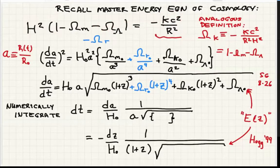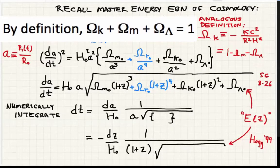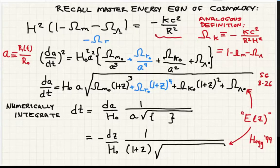I want to give you one other identity which is going to be useful. Omega k is this kind of weird thing. If you don't want to call it omega k, that's OK. You can just call it this. It's whatever it takes to add to omega matter and omega radiation and omega lambda to make one.